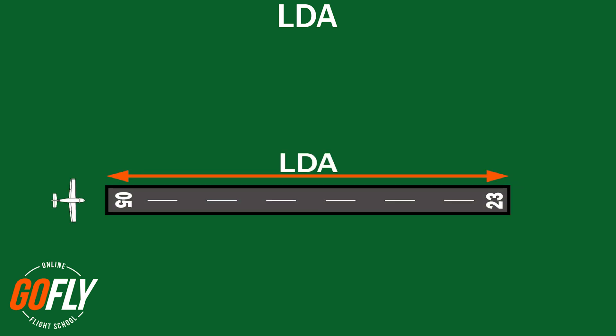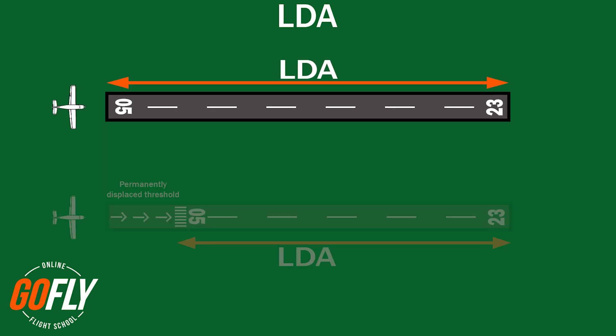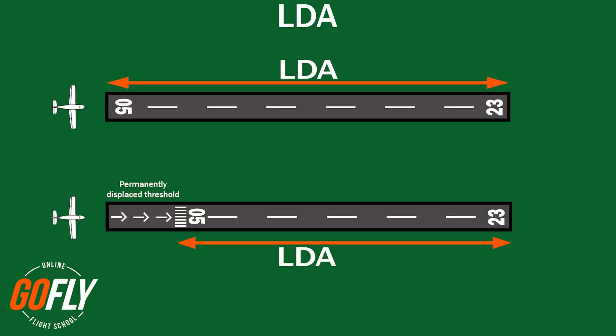The landing distance available, or LDA, is normally the same as the take-off run available — that is, the physical length of the runway. Some airports have a displaced threshold, meaning that much less of the runway is available for landing, shortening the landing distance available. If your destination airport has a displaced threshold, its details will be noted in the URSA.